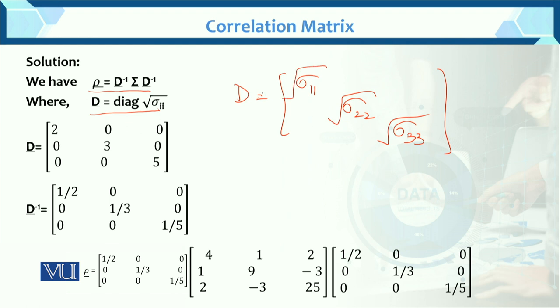Now D, we have sigma given, so we have D value diagonal.